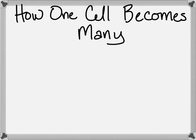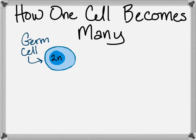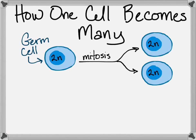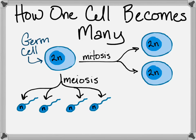We're going to start with a little review and then pick up at fertilization. As a review, a diploid germ cell can produce more of itself through mitosis, or produce sex cells, also called gametes, that are haploid by meiosis.